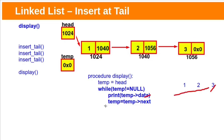Again advance temp. Temp will now be pointing to null. So temp will be null, and after printing these three values, the while loop will not execute.